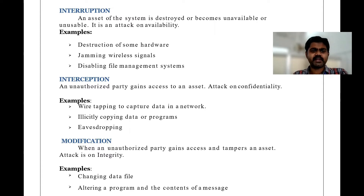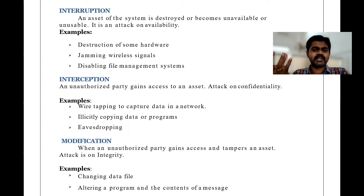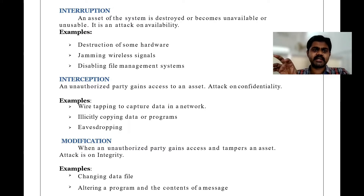Jamming of wireless signals is one example of interruption. Disabling the file management system — meaning you are unable to open the files and can't access their contents — also comes under interruption. So that is the first one.